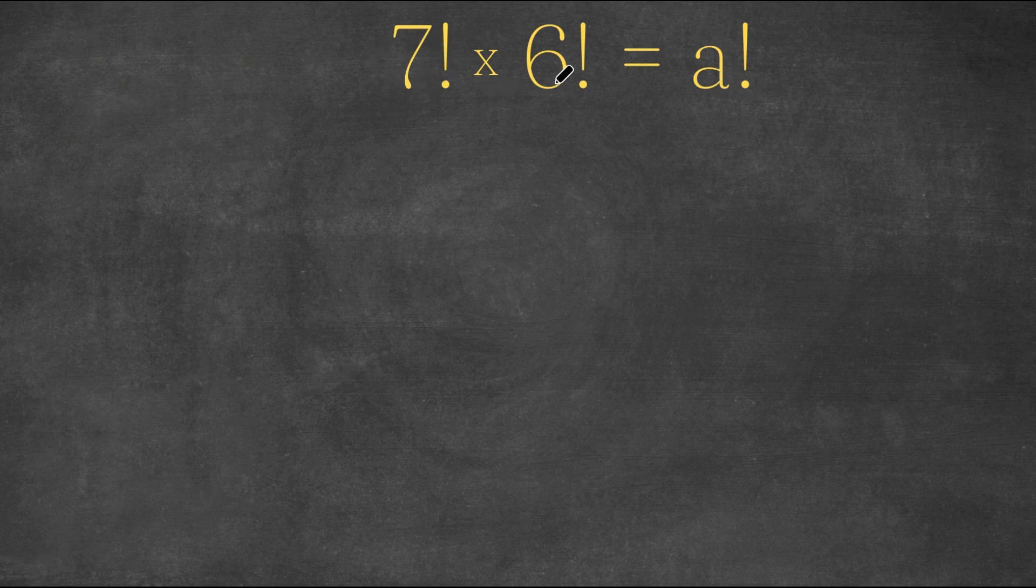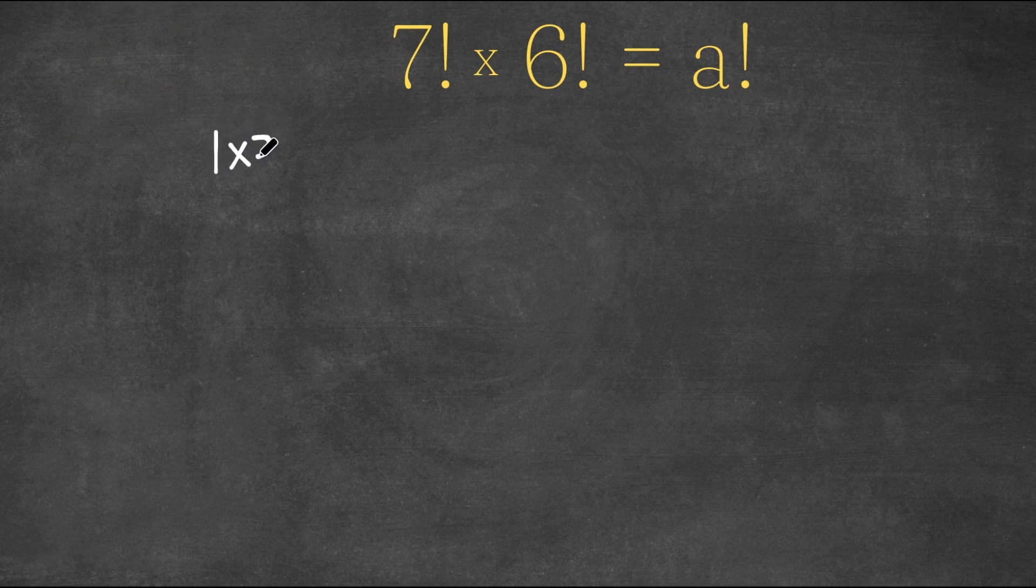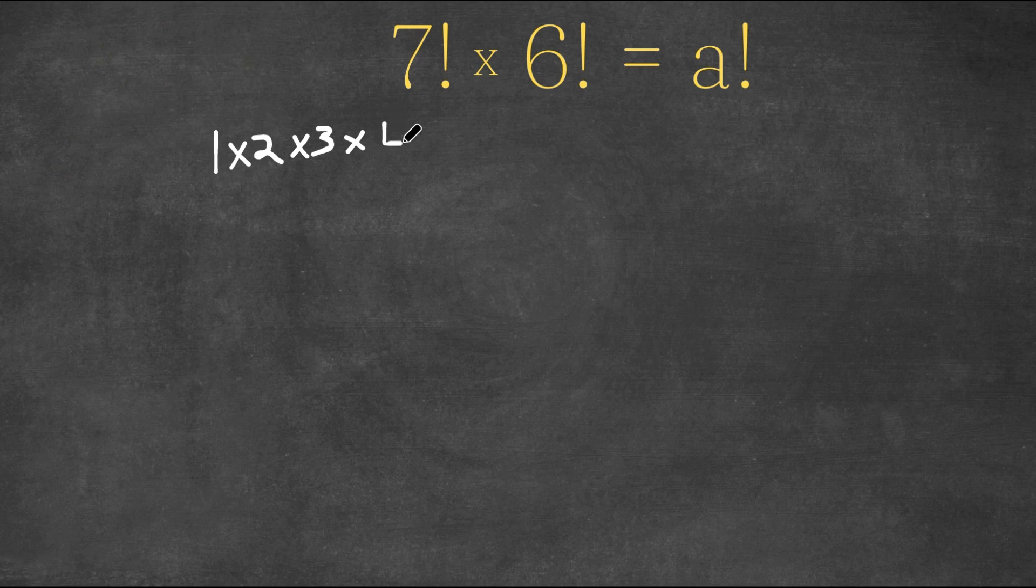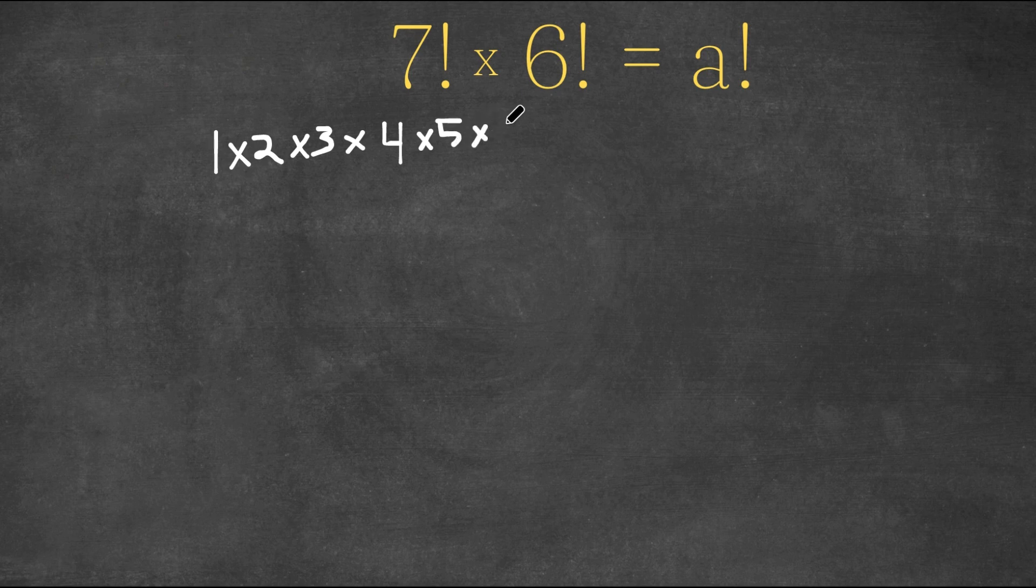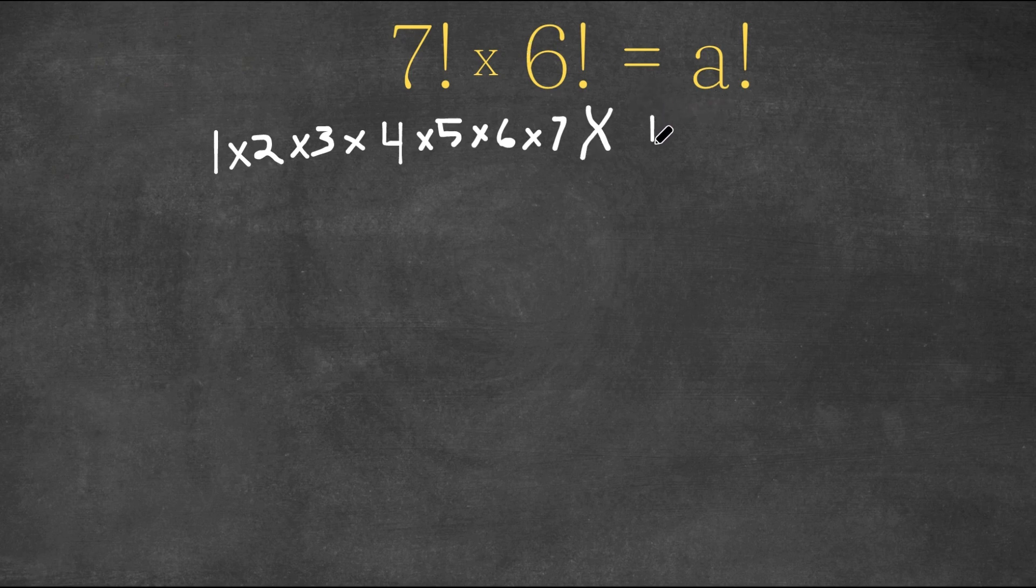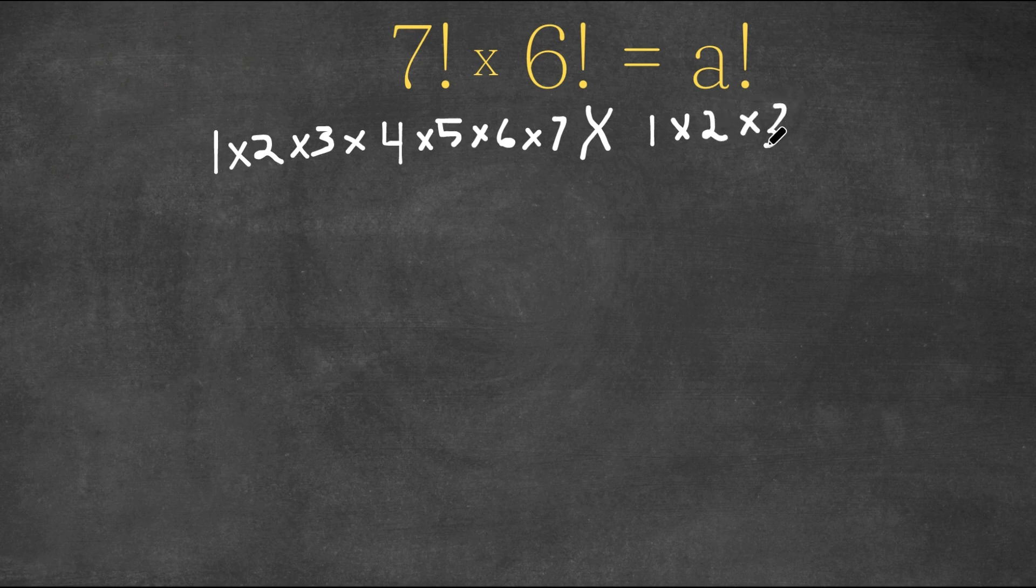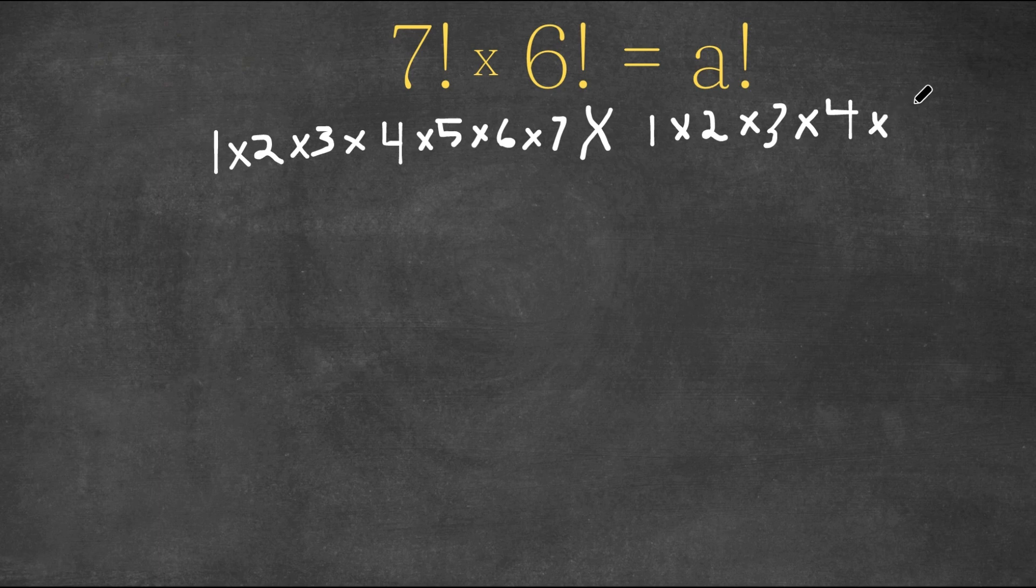First, let's rewrite these. 7 factorial is the same thing as 1 times 2 times 3 times 4 times 5 times 6 times 7, and we are multiplying this with 6 factorial, which is the same thing as 1 times 2 times 3 times 4 times 5 times 6.